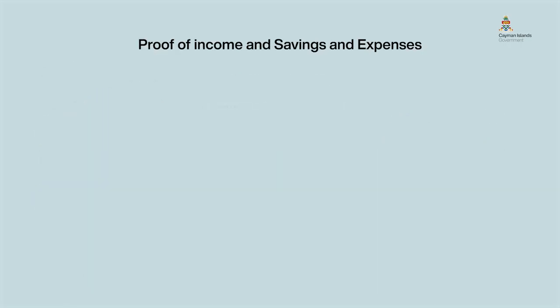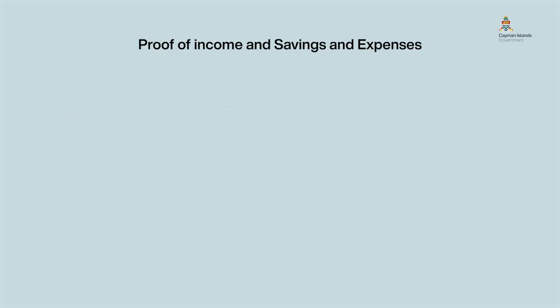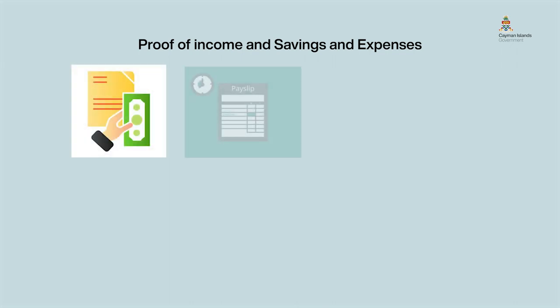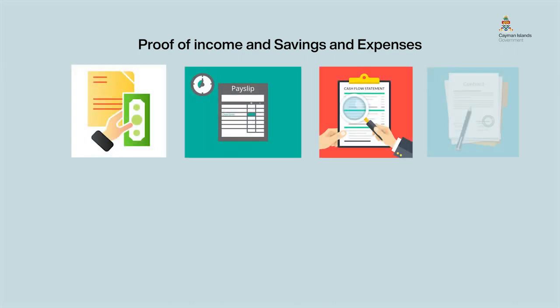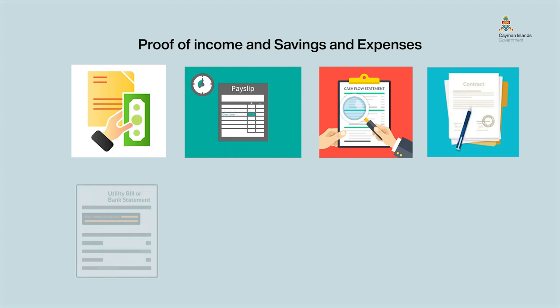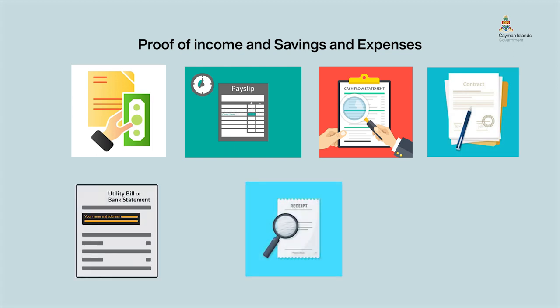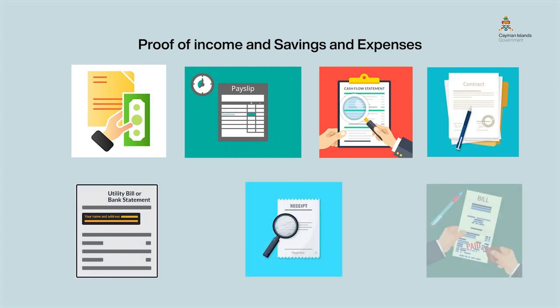A photo identification, proof of income and savings if applicable, in the form of pay slip, job letter, bank statements, as well as utility bills, lease agreements, invoices, etc. as proof of expenses.